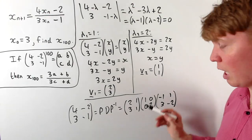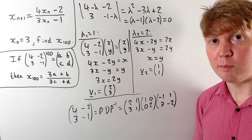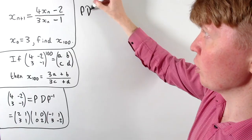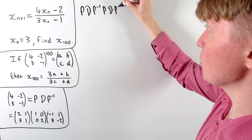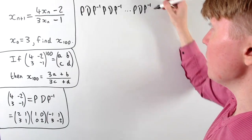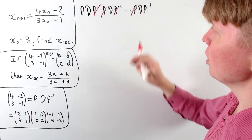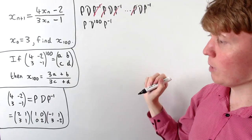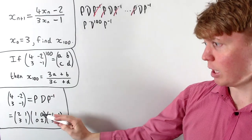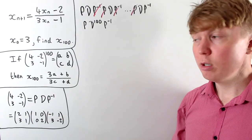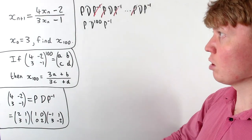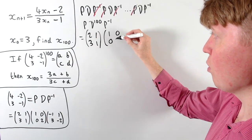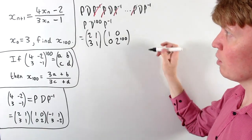Now that we have the diagonalised form, raising the matrix to the 100th power is straightforward: A¹⁰⁰ = P · D¹⁰⁰ · P⁻¹. Raising a diagonal matrix to a power is easy — we just raise each diagonal entry: D¹⁰⁰ = [1¹⁰⁰, 0; 0, 2¹⁰⁰] = [1, 0; 0, 2¹⁰⁰]. We then multiply P · D¹⁰⁰ to get [2, 2¹⁰⁰; 3, 2¹⁰⁰].